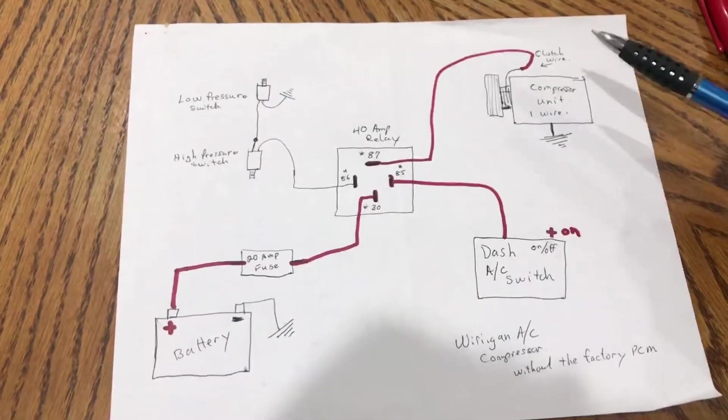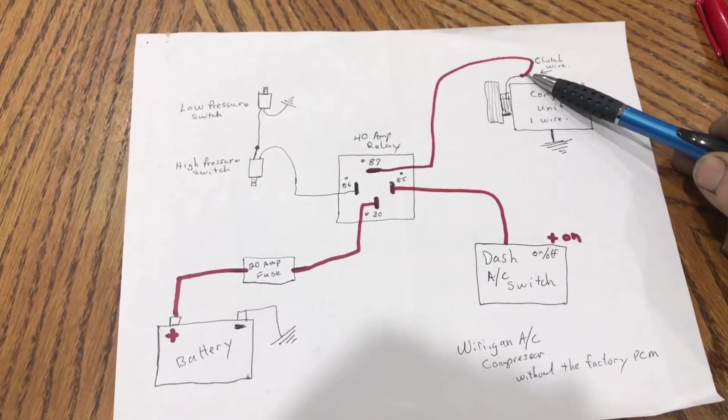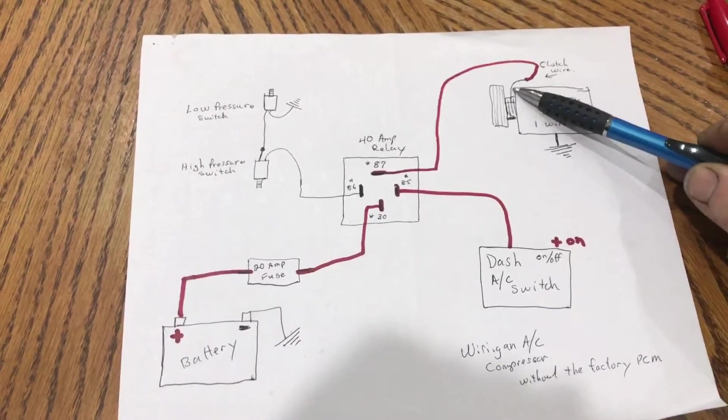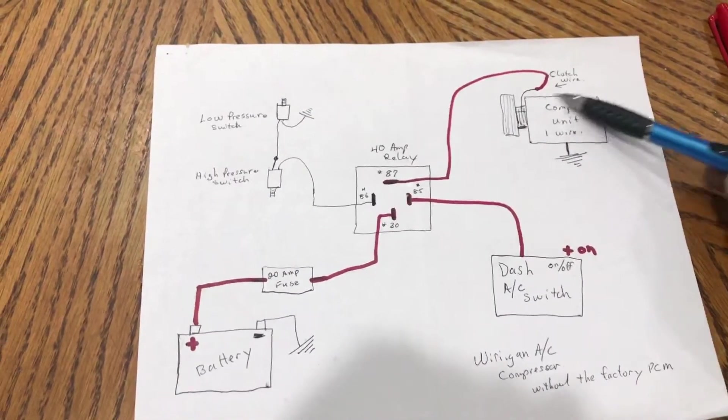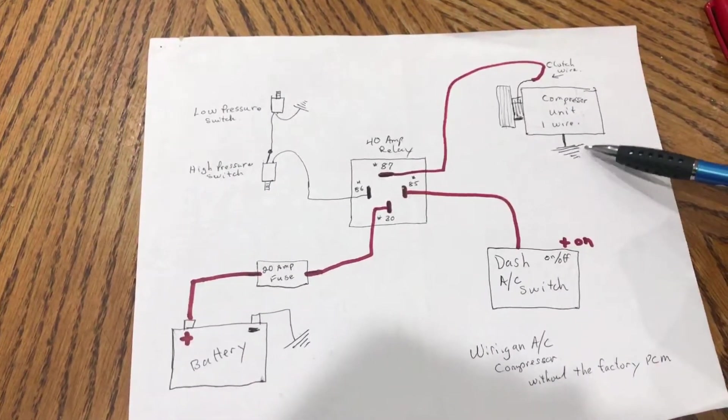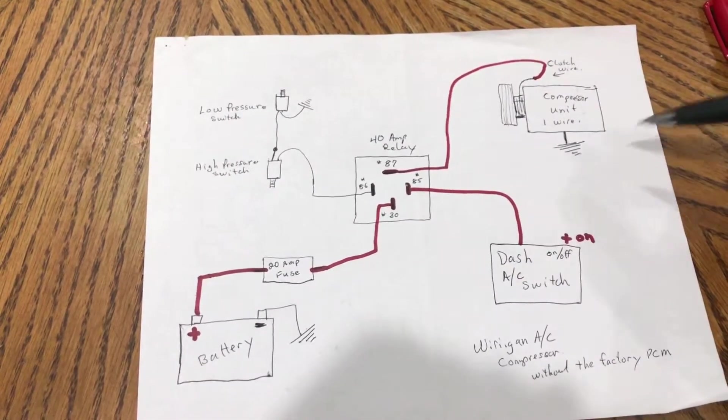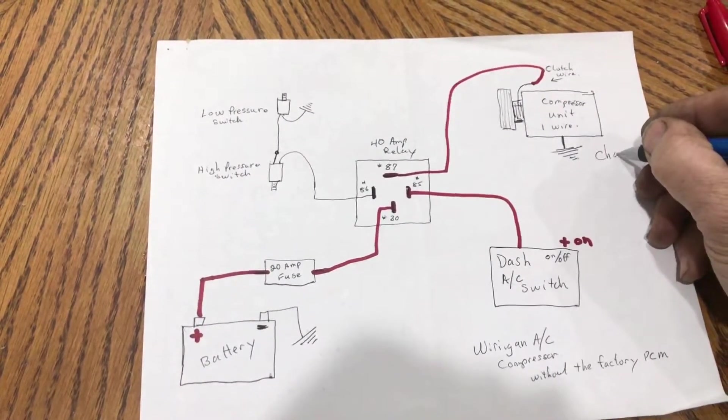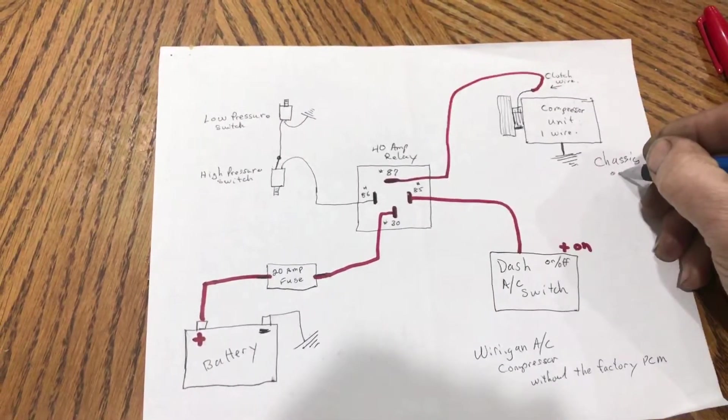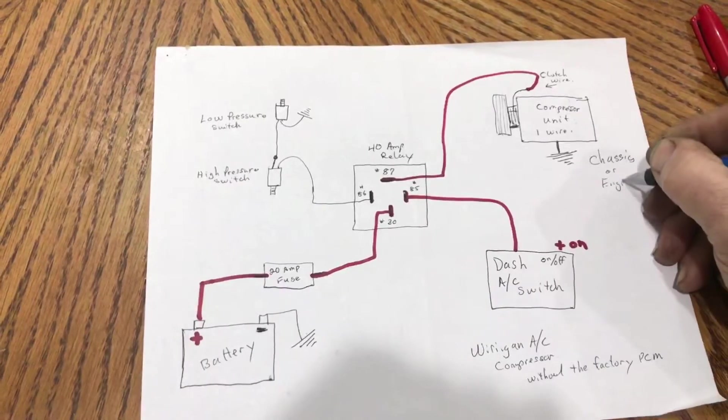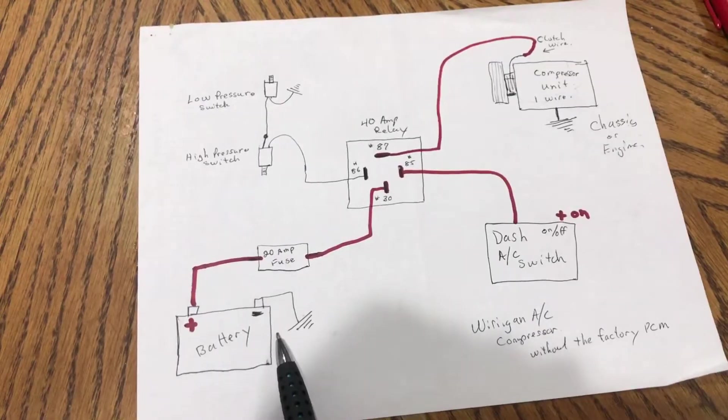The only thing you're looking for is this compressor. If the compressor only has one wire coming out of it, that wire goes to the clutch on the compressor, which activates the compressor. The compressor grounds through the housing when it's grounded to the engine, and the engine is grounded to the chassis, which is grounded back to the battery.